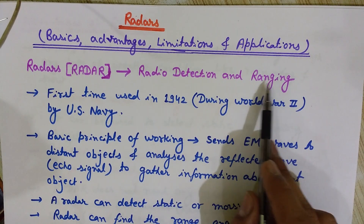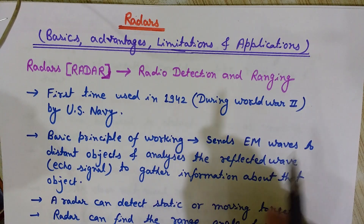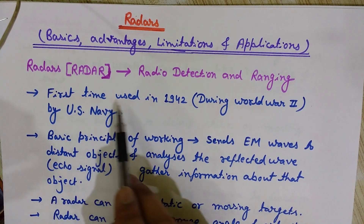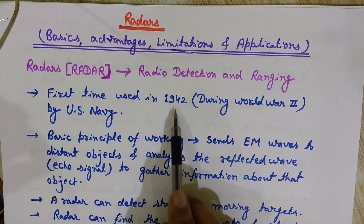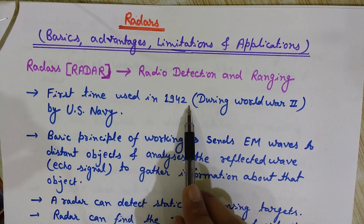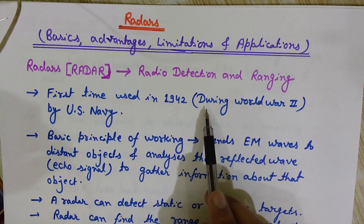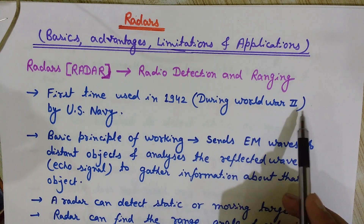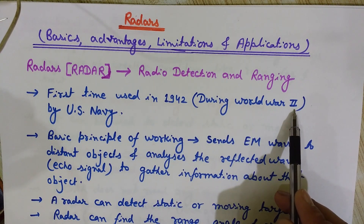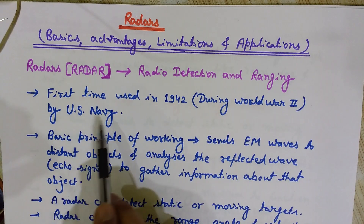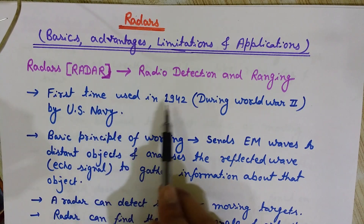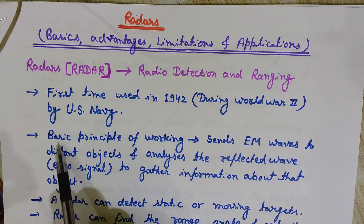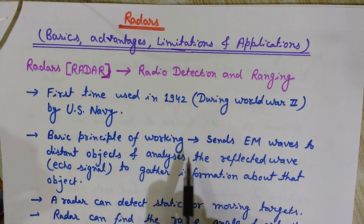Based on the reflected signals, the radar can detect that there is some target located at a particular place, and determine its range, velocity, and angle. The radar was first used in 1942 during World War II by the U.S. Navy.